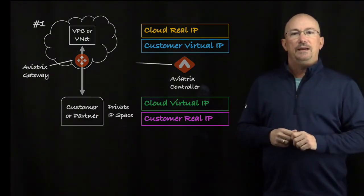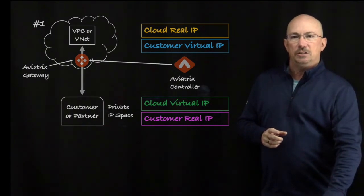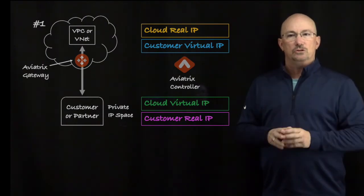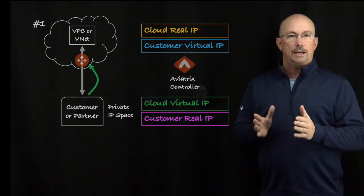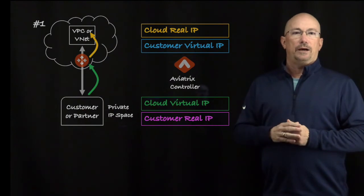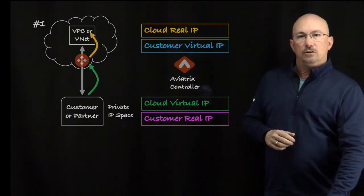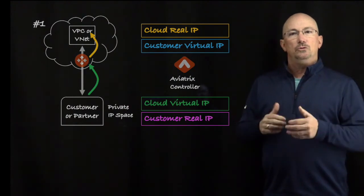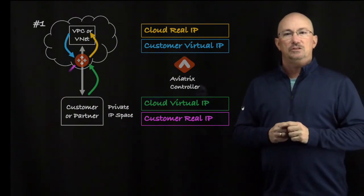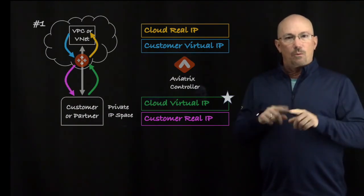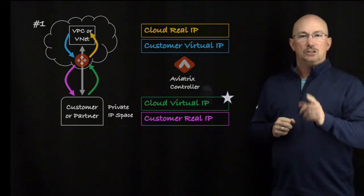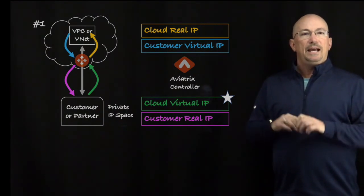The Aviatrix controller sends this information to the gateway. When the customer wants to talk to your service in the cloud, they use the virtual IP you've given them, which gets translated to the actual cloud IP as it talks to the service. In the opposite direction, in the response, you use the customer's virtual IP address, which gets translated and then sent to the customer's real IP. A lot goes on in terms of source NATing and destination NATing, but the only thing you have to provide to the customer is that cloud virtual IP, and everything works.